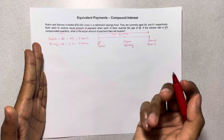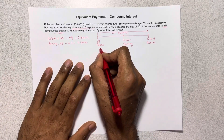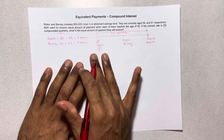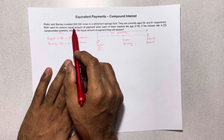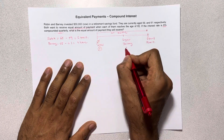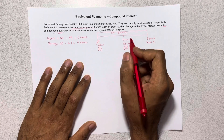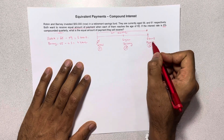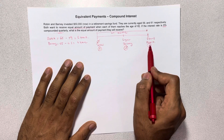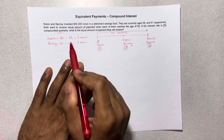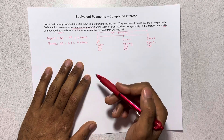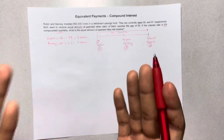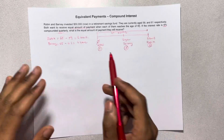There are technically three focal dates. We can calculate all the equivalent value today, or all the equivalent value when Barney retires, or all the equivalent value when Robin retires. Regardless of the focal point you choose, the equivalent payment value calculated will be the same in each case — it's just the way we set up the equation that varies.